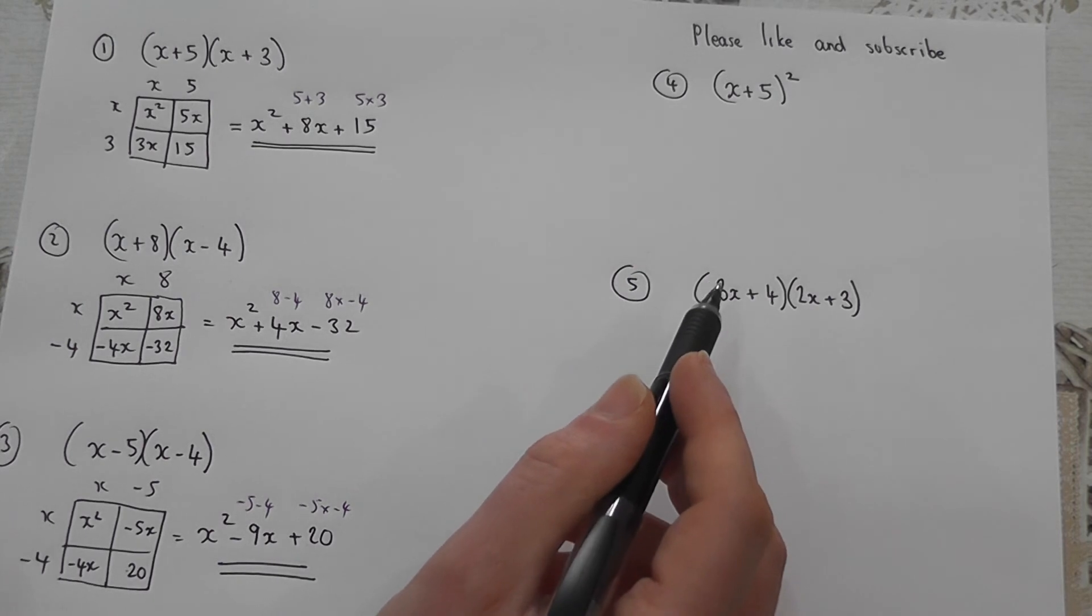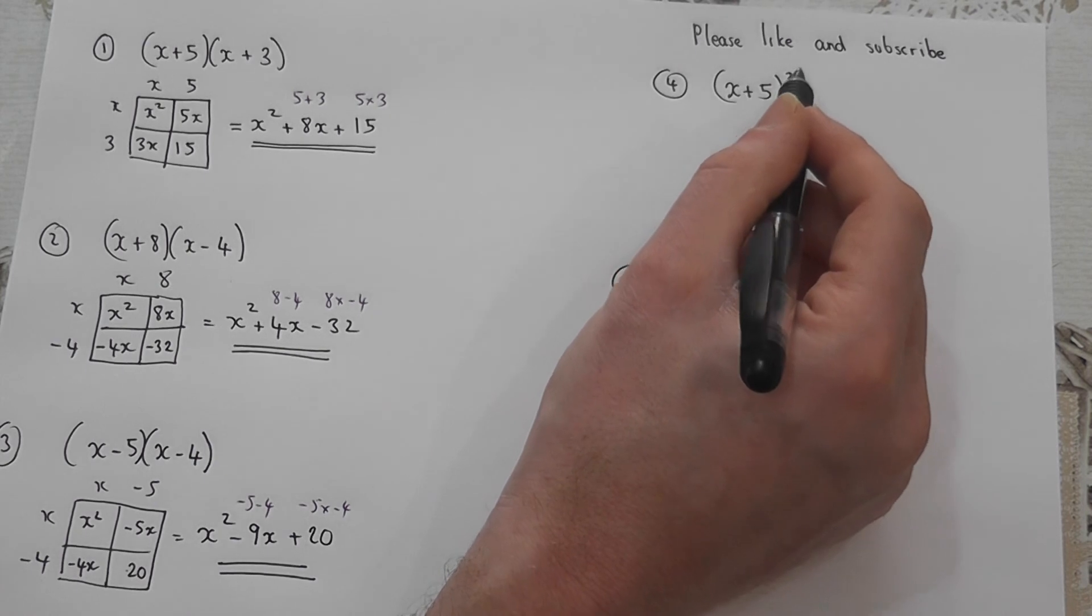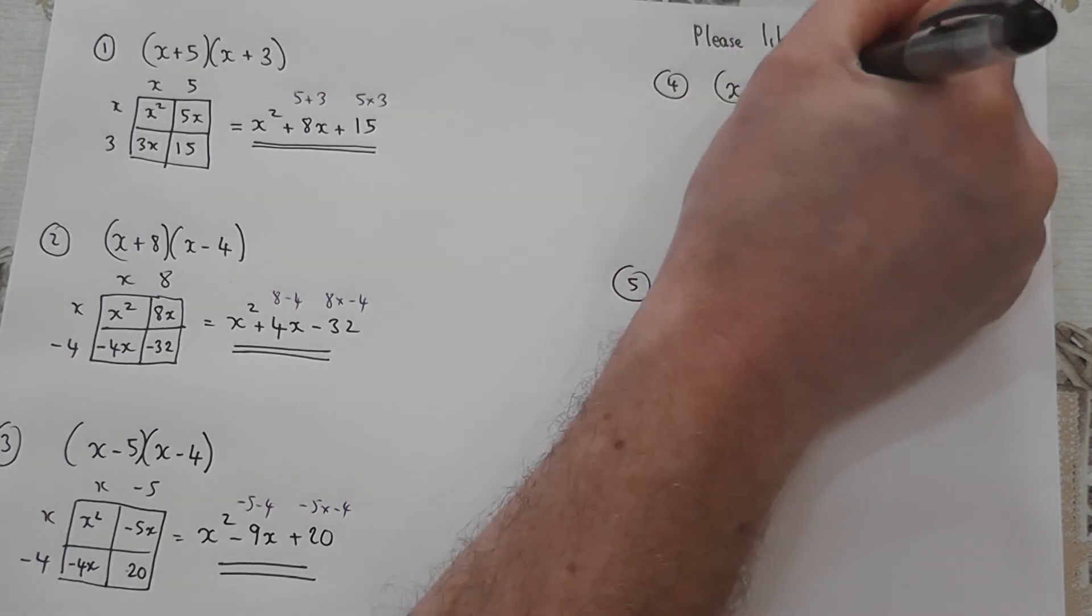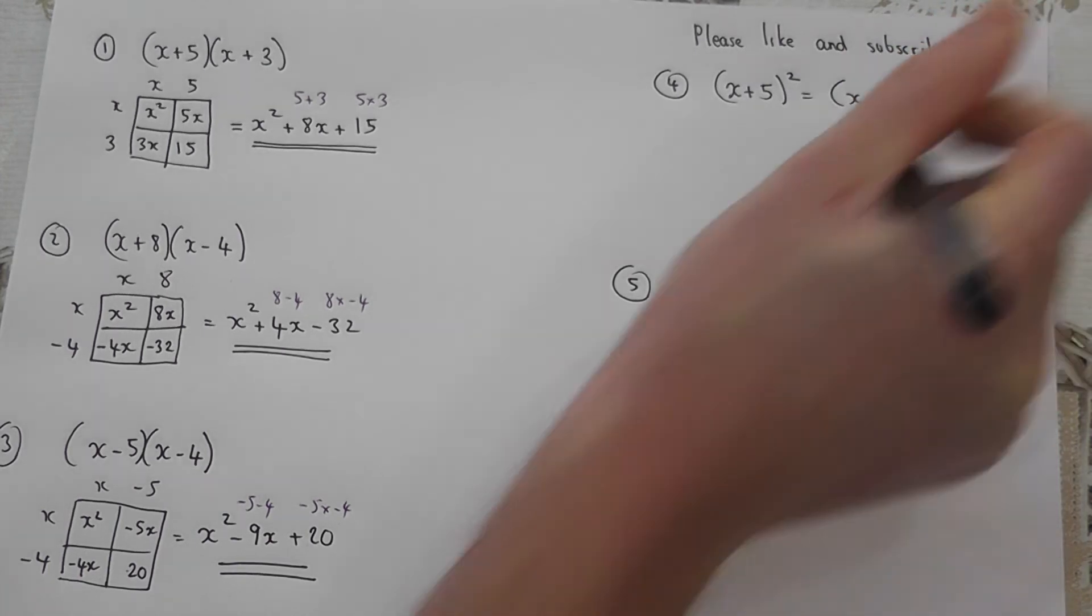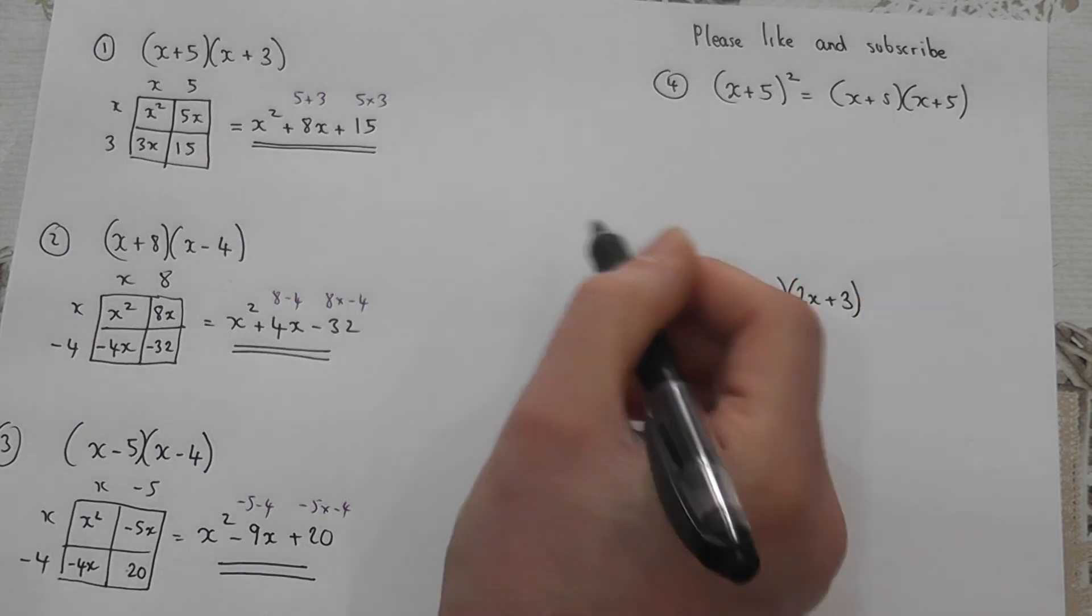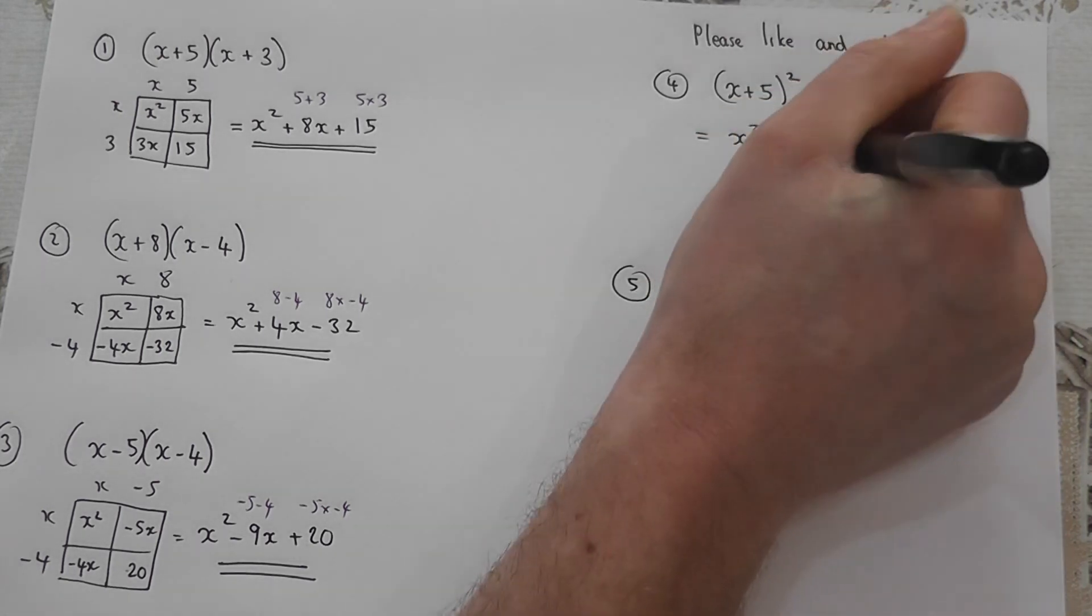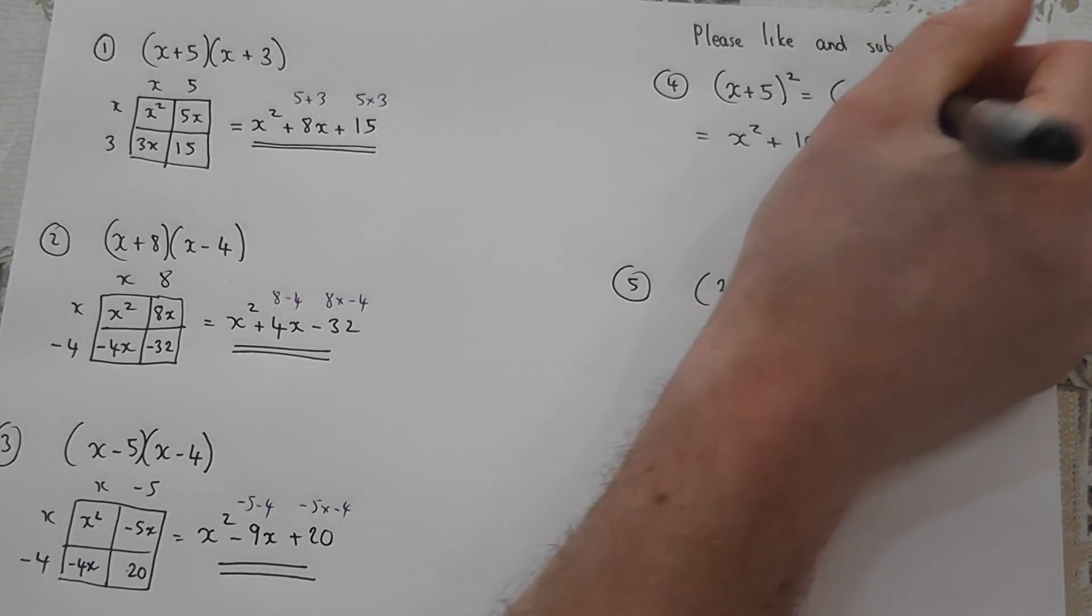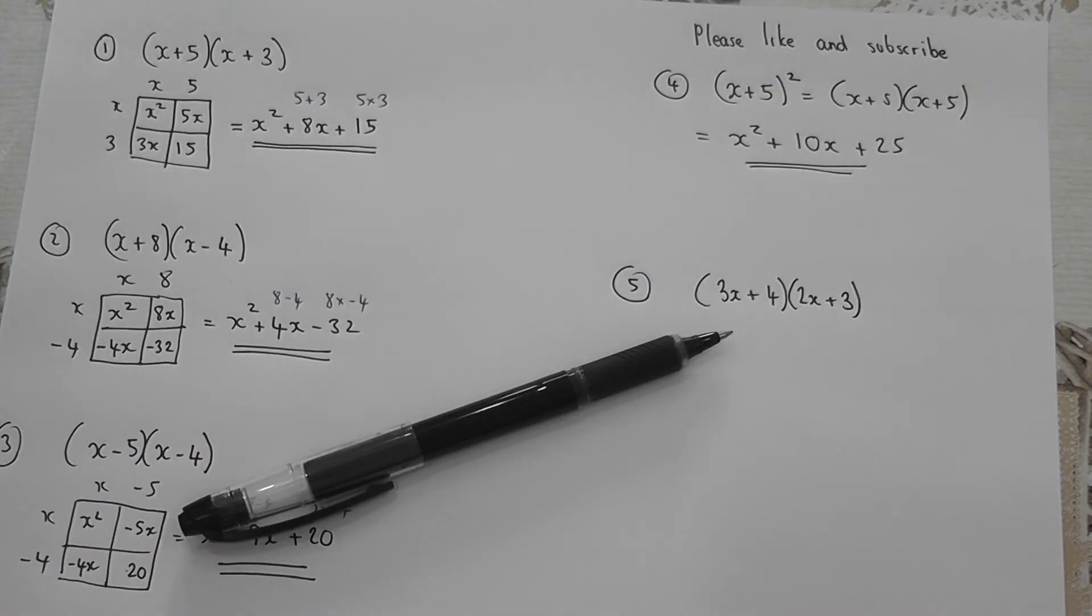Okay so the last two. Again a reminder please do like and subscribe and share the video. Now a square always causes lots of problems. However the key thing here is what the square actually means. All it means is x plus 5 times x plus 5. Double bracket. And we'll use the shortcut for this one rather than the grid. So here's the shortcut. We get an x squared term. 5 plus 5 is 10. So the middle term is 10x. And 5 times 5 is 25. And that is the expanded form of x plus 5 all squared.